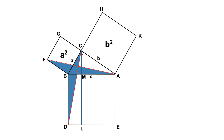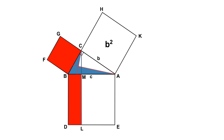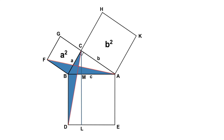Euclid was able to prove that two triangles are congruent — that is, they are the same — and both are half the area of the square BCGF and half the area of the rectangle BDLM. He used this to prove that the area of the square BCGF has the same area as the rectangle BDLM. So in theory, the combined area of these two triangles should fit exactly into the square BCGF and the rectangle BDLM.